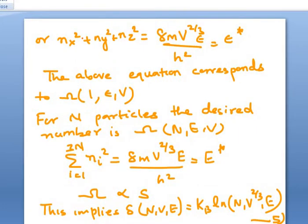With this background information, moving forward, let us write nx² + ny² + nz² = 8m L² (which is V^(2/3)) ε/ℏ² = ε*. The above equation corresponds to a single state. Now for N number of particles, the desired number Ω(N,E,V) is given by Σᵢ₌₁³ⁿ ni² = 8m V^(2/3)/ℏ² E* = E*. This is a profound understanding because we have finally expressed it in terms of V^(2/3).